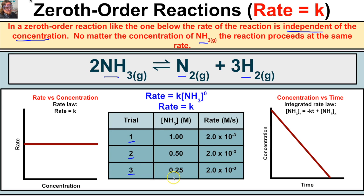In trial three we start with a concentration of NH3 equal to 0.25 molar. In trial two we double the concentration, and if we look at the rate it remains unchanged. Even as we increase the concentration between trial three and trial two, and trial two and trial one, the rate remains unaffected.